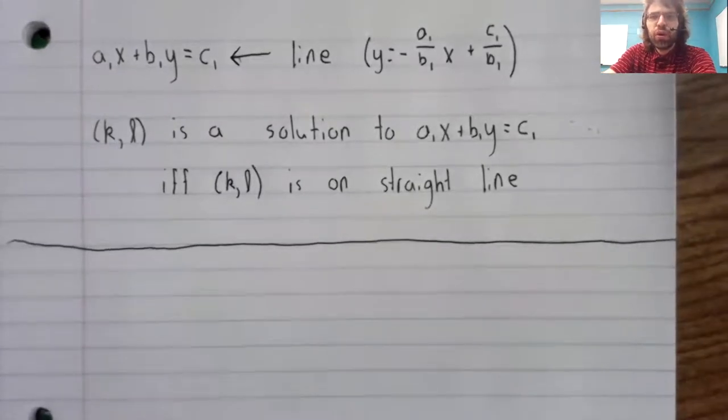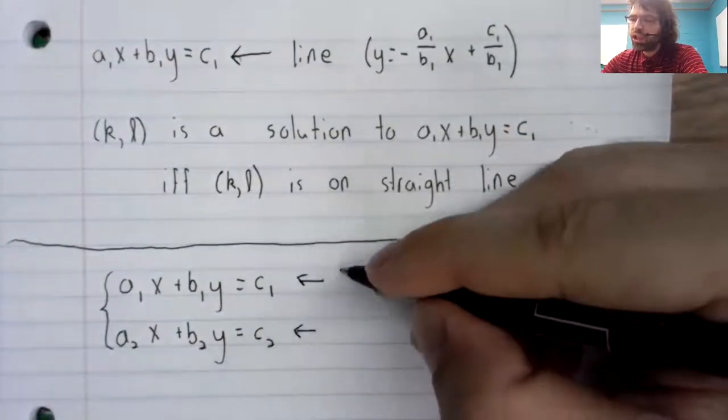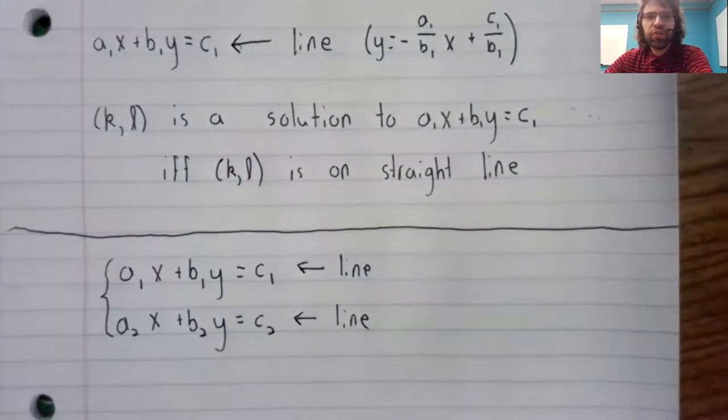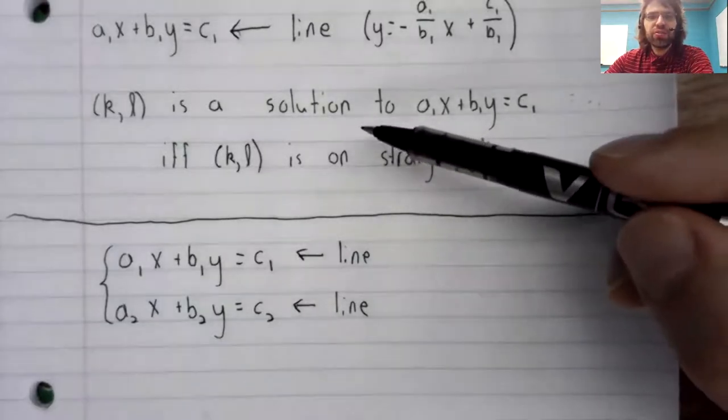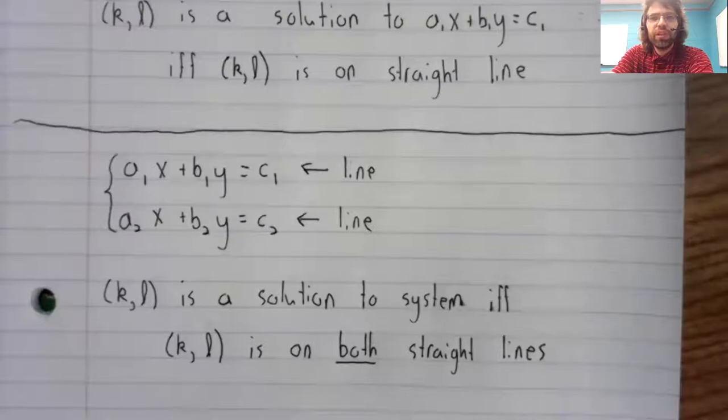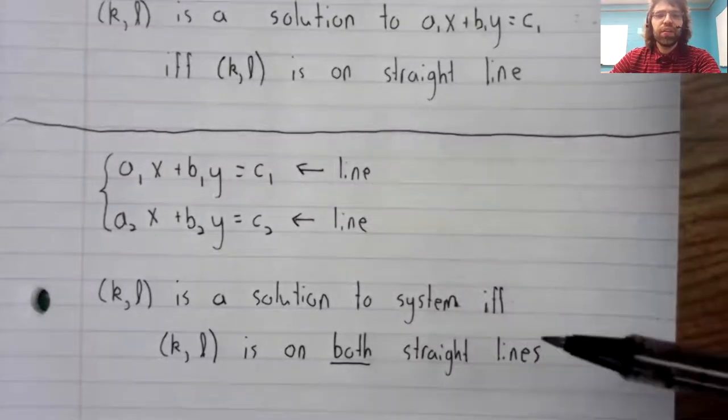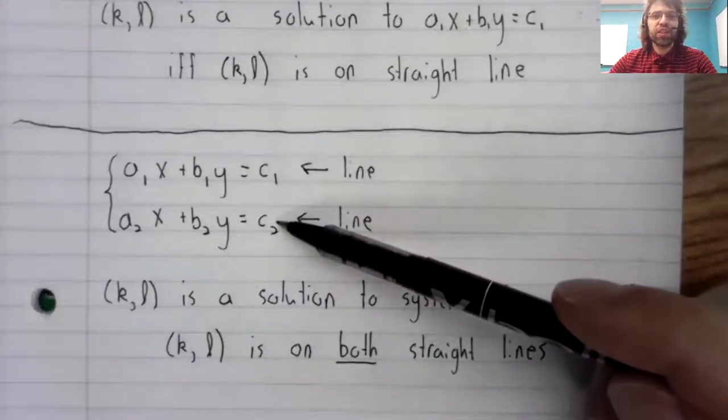Let's now make a new observation. Suppose instead of a single equation, we have a system. Then both of the equations in the system gives you a straight line. And going back to this statement, a point is a solution to a system if it's on both the straight lines.